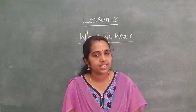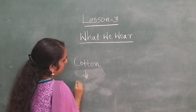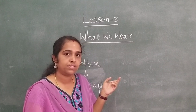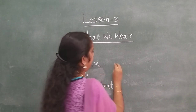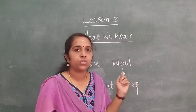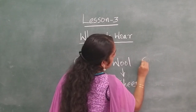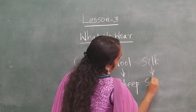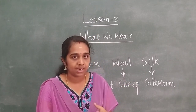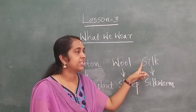From where do we get cotton? We get cotton from the cotton plant. From where do we get wool? We get wool from sheep. From where do we get silk? We get silk from the silkworm. You might have seen silk saree or silk scarf with your mother. I repeat: we get cotton from cotton plant, wool from sheep and silk from silkworm.